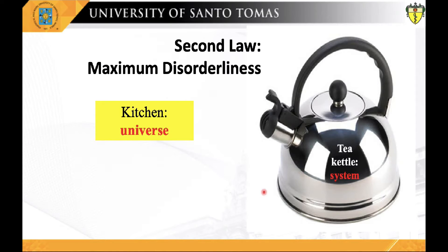The reacting system is a collection of matter that is undergoing a particular chemical or physical process. It may be an organism, a cell, or two reacting compounds. In the example we will use to explain change in entropy, the system will be the tea kettle, and the universe is the kitchen. The reacting system and its surroundings together constitute the universe. Living cells and organisms are open systems, exchanging both material and energy with their surroundings, and are never at equilibrium with their surroundings.